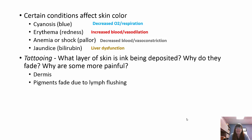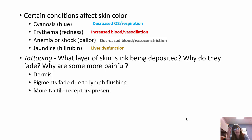Regarding tattooing: the layer of skin where ink is deposited is the dermis. Why do they fade? Pigments fade due to the lymphatic system flushing, and also because of the constant sloughing off of skin. As your skin sloughs off and the lymphatic system flushes your dermis, the pigment fades. Some tattoos are more painful than others because you have more tactile receptors present in those areas.